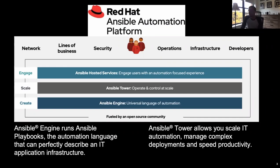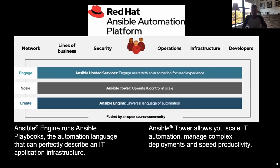Above the engine, we have Ansible Tower — the graphical user interface management system that lets you manage all of your automation happening across the enterprise. Ansible Tower provides features like user IDs assigned with different roles and permissions, so you can distribute automation across your enterprise to the specific roles that should have access to those playbooks.